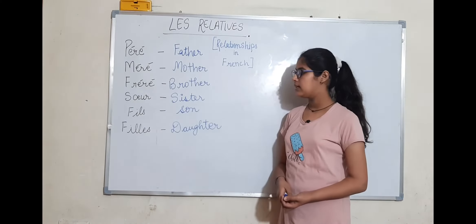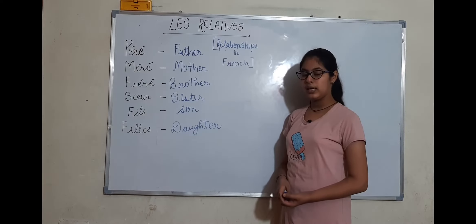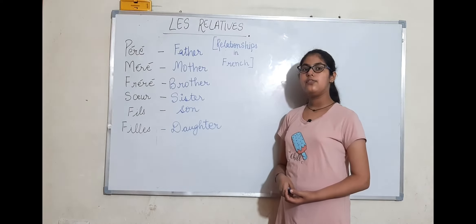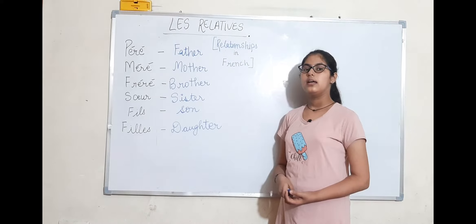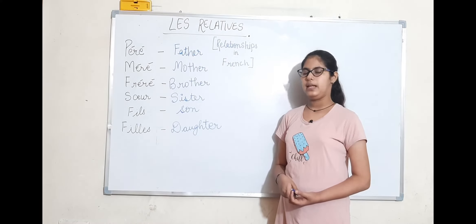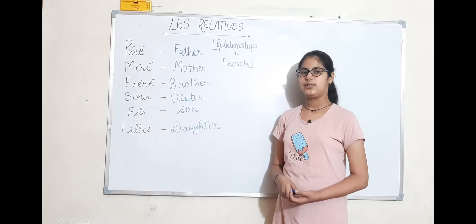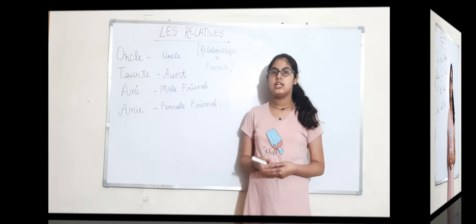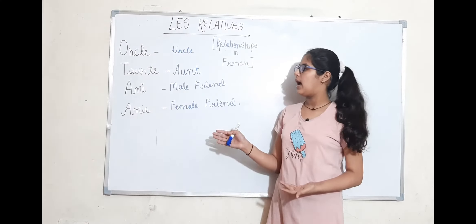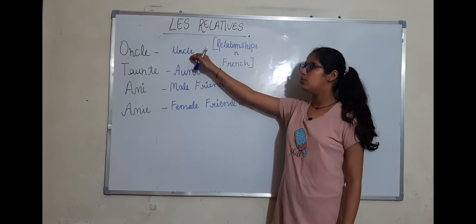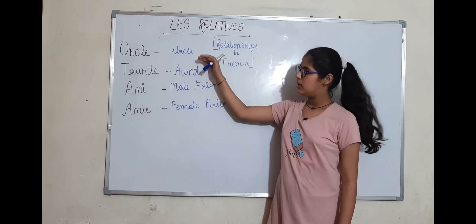Then sixth, Fille, which means daughter. In the fifth one, if you see, F-I-L-S is the spelling and the L has been silent. Okay friends. So the seventh one we have is Oncle, which means uncle.